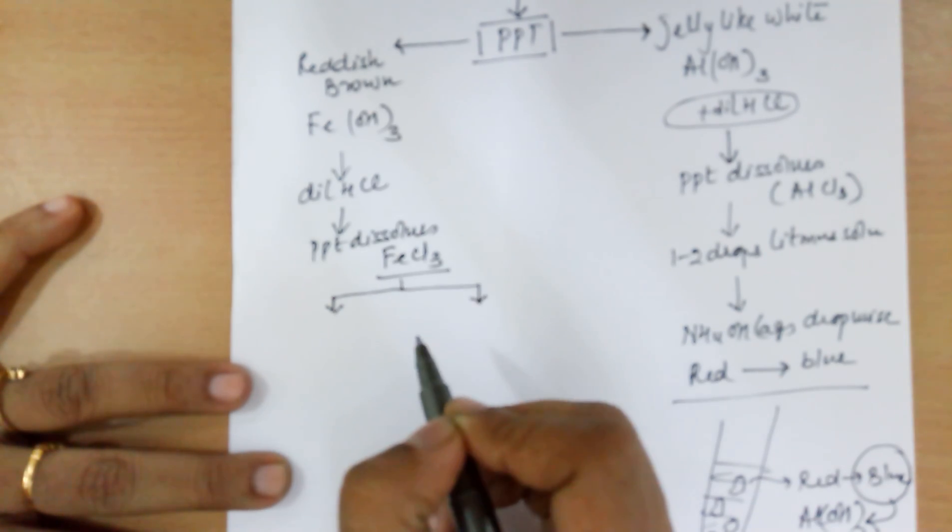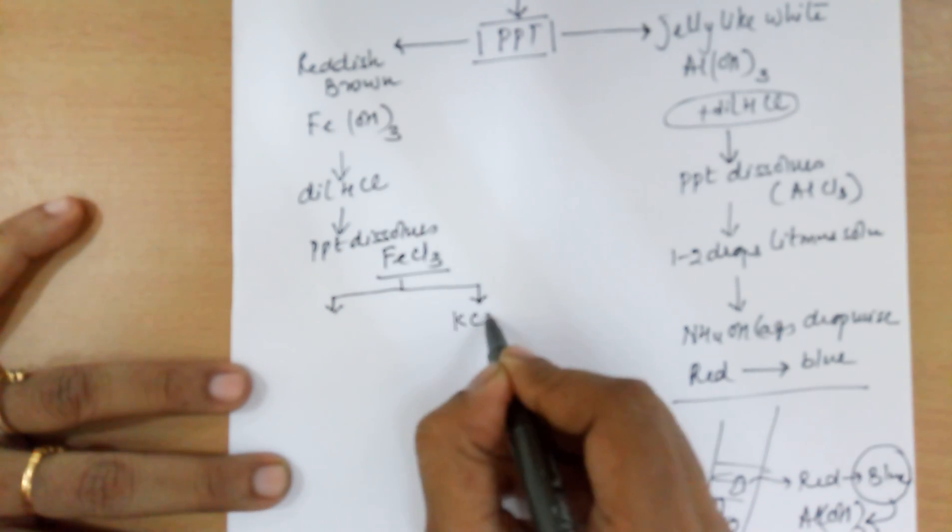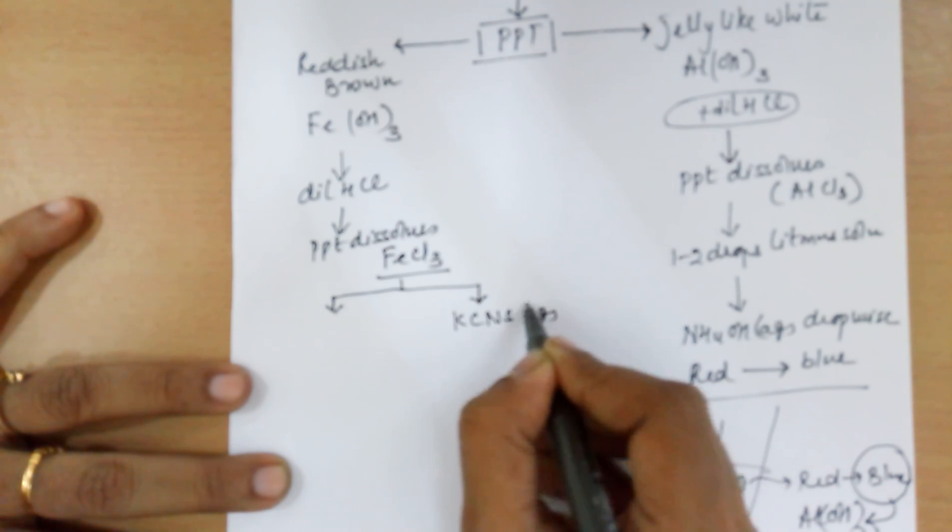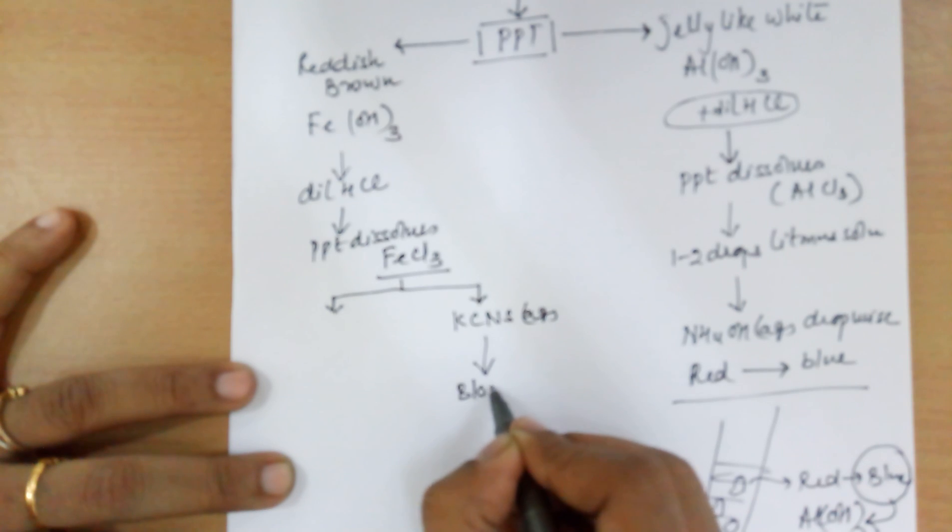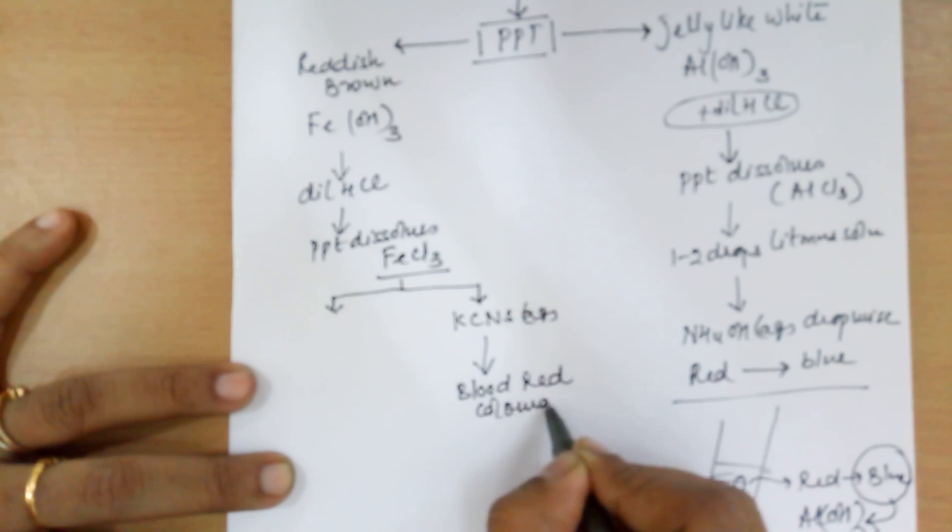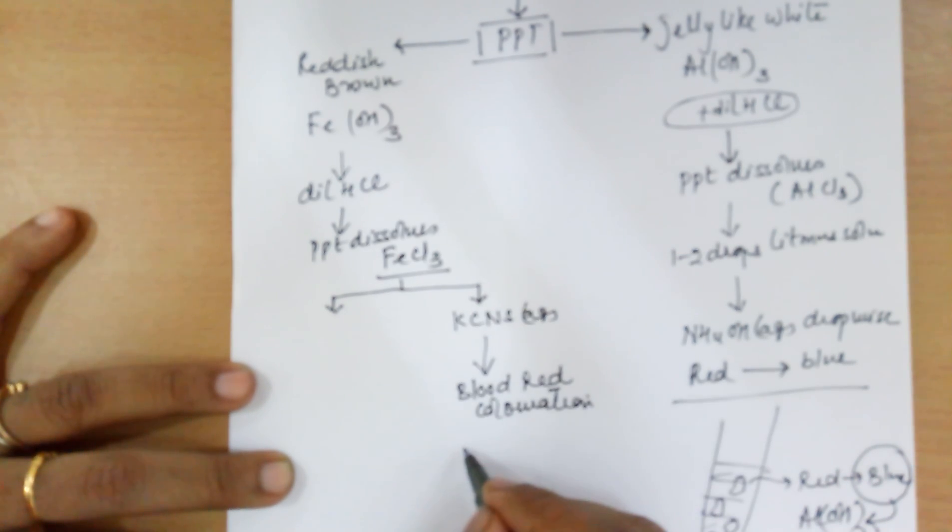On dividing into two parts, to the first part, add KCNS aqueous, potassium thiocyanide. This will give you a blood red coloration. The coloration of course would have a formula of iron, valency 3, CNS, valency 1. So the formula of the blood red coloration becomes this.